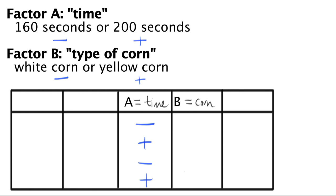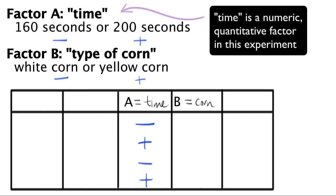These signs tell the experimenter what levels to operate that factor at. For factor A in this experiment, that means we will have two experiments at 160 seconds, and these other two experiments will be run at 200 seconds. For numeric variables, the minus corresponds most naturally to the smaller numeric value, and the plus to the larger numeric value.